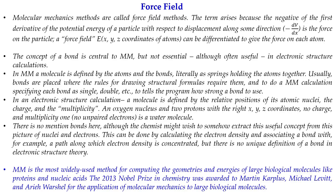In molecular mechanics, you must explicitly define each bond — for example, the O–H bond — to describe a water molecule in the program. By contrast, in electronic structure theory there is no explicit mention of bonds. Although we are always interested in extracting bond concepts from nuclei and electrons, this can be done by calculating electron density and associating a bond with a path along which electron density is concentrated, but there is no unique definition of a bond in electronic structure theory.